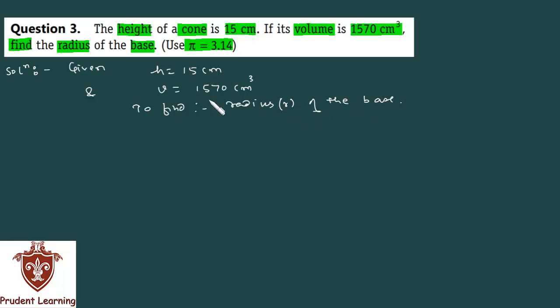Volume is given, height is given, radius needs to be found. We know that volume of a cone is equal to 1/3 π r² h. Volume you have is 1570.